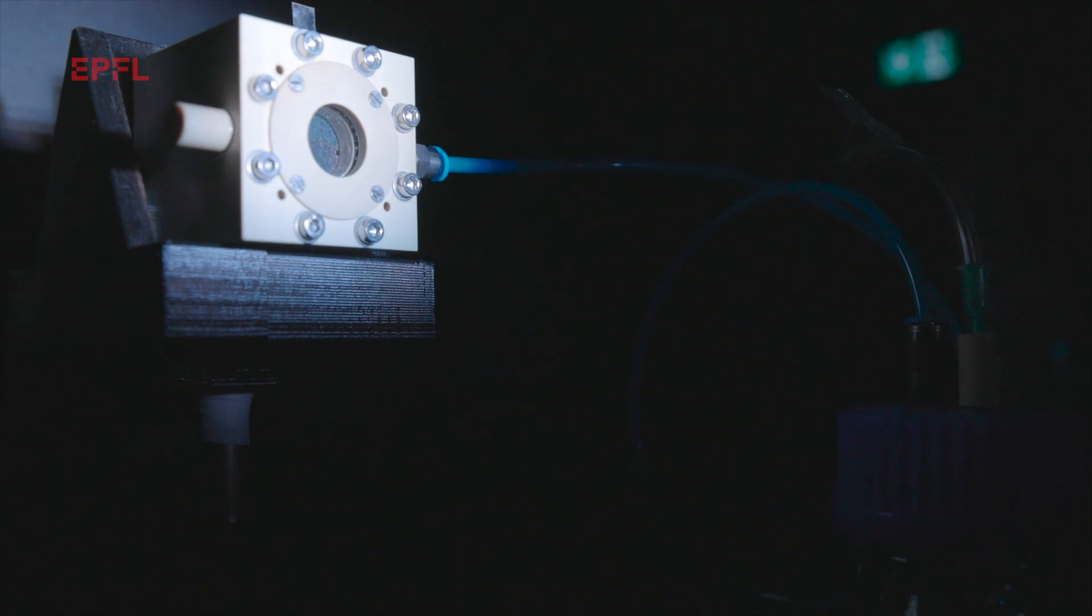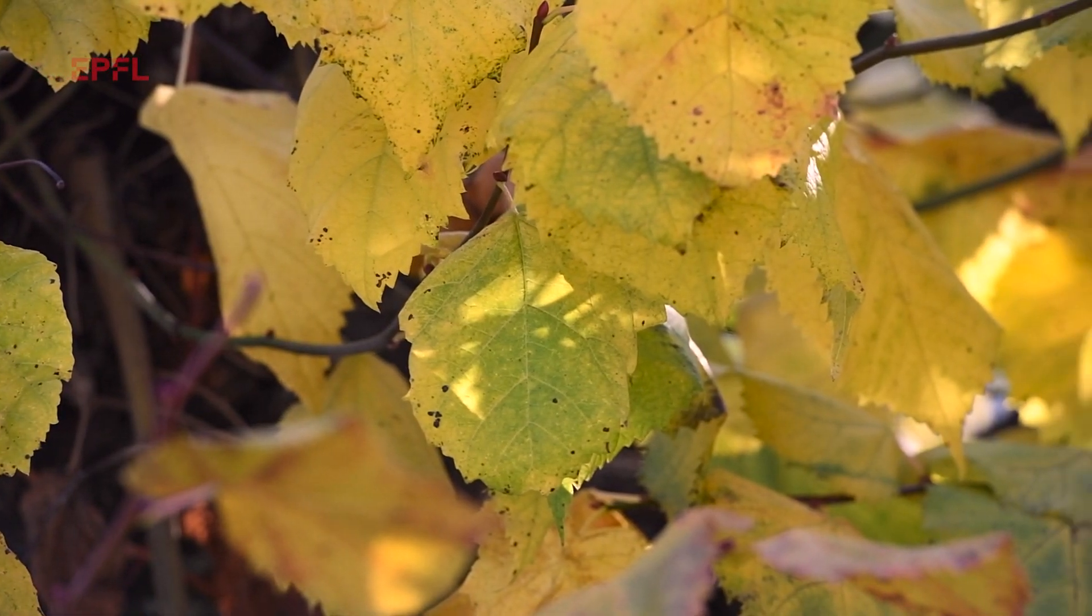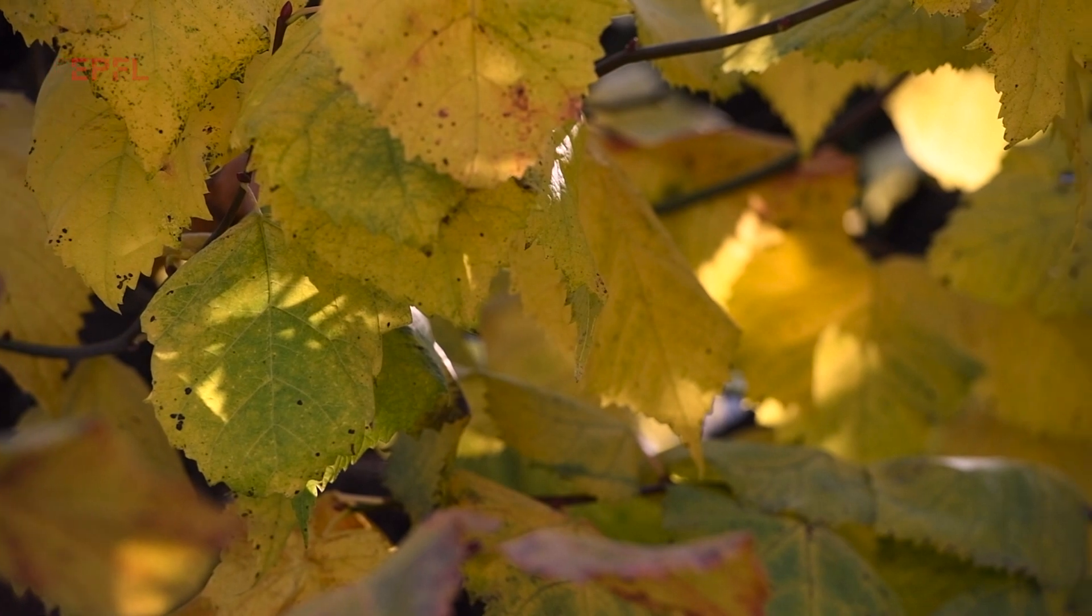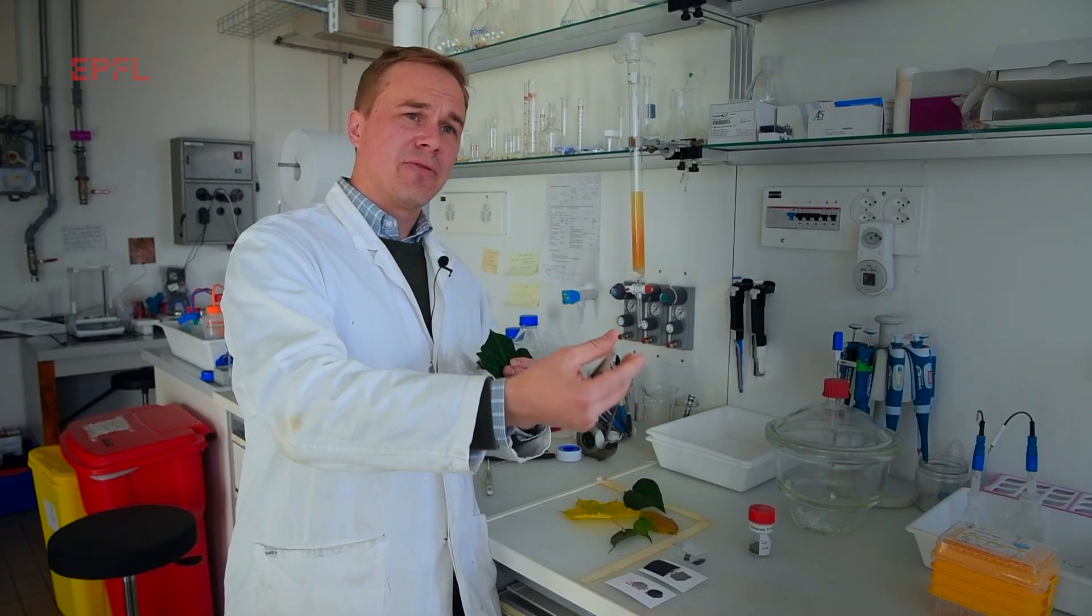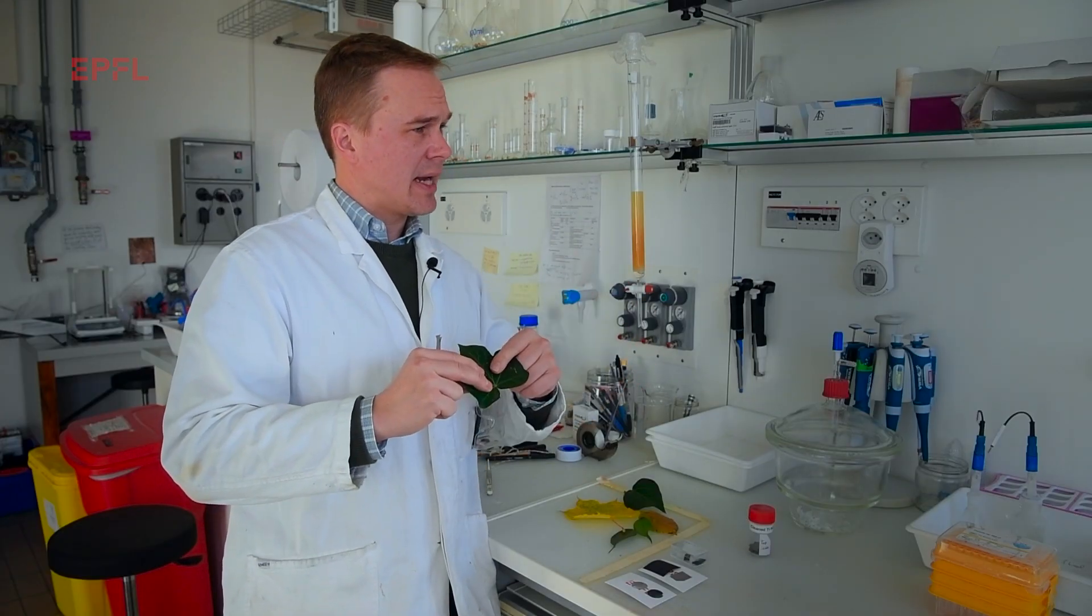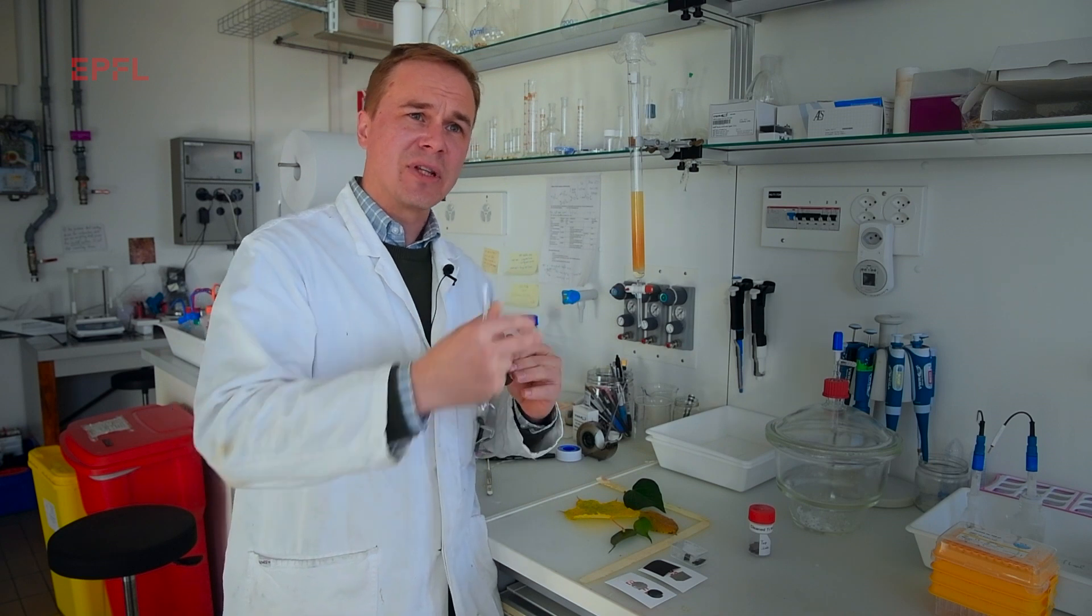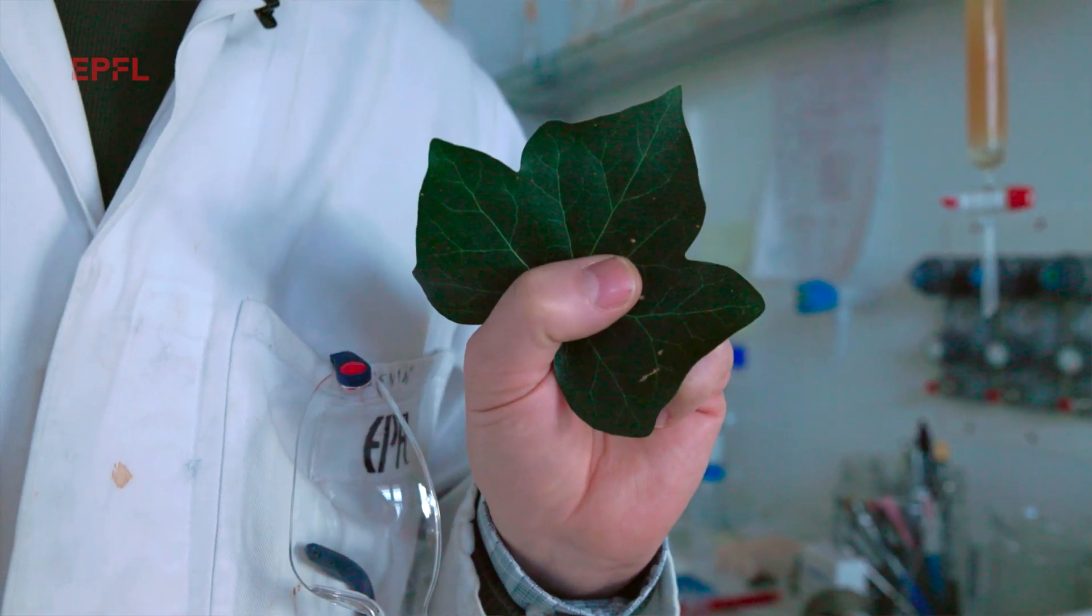Our work was inspired by the way a leaf works. Natural photosynthesis occurs by taking carbon dioxide from the air together with sunlight and produces sugar, effectively storing the sun's light in a chemical form.